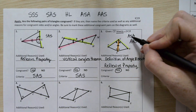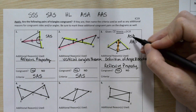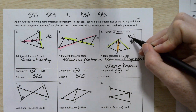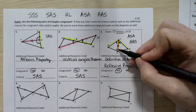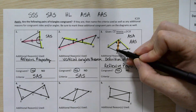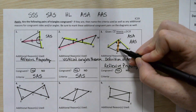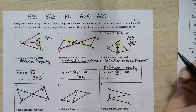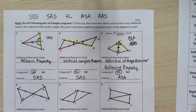To choose between ASA and AAS, check whether the side is connected to both marked angle pairs or just one. The orange highlighted side travels from the star-marked angle up to the circle-marked angle in both triangles. Since the side connects to both marked angles, this is an angle-side-angle situation.